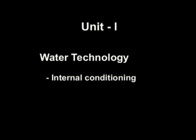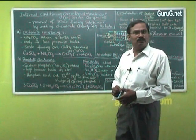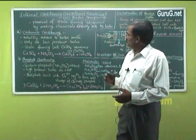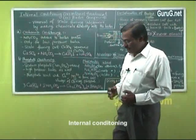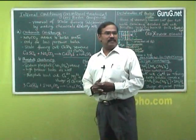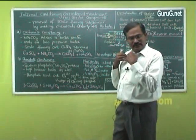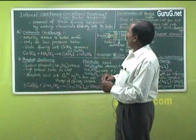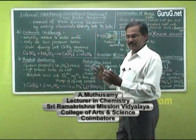Softening of water can be carried out by two major processes. One is external conditioning and the second one is internal conditioning. In external conditioning, we purify the water before it is fed into the boiler. But in internal conditioning, the raw water is simply fed into the boiler, and chemicals are added into the boiler which remove the scale-forming substances. That is the major difference.